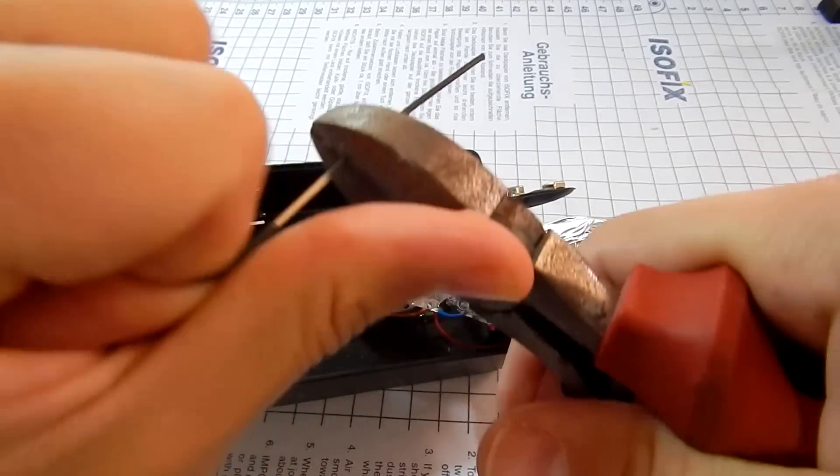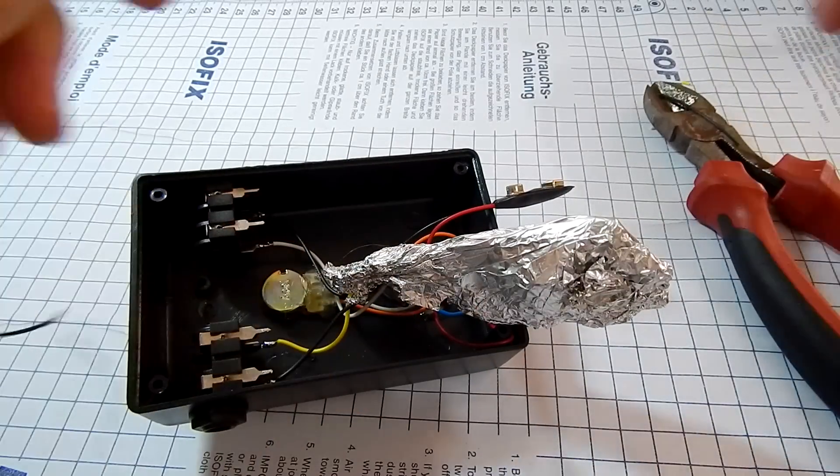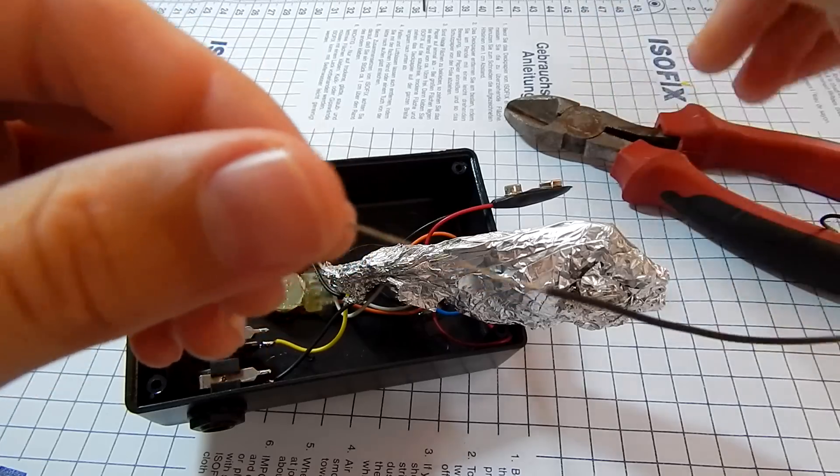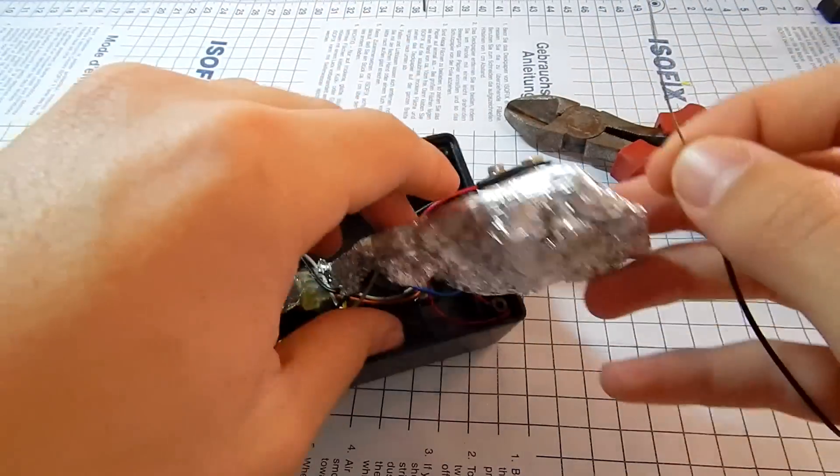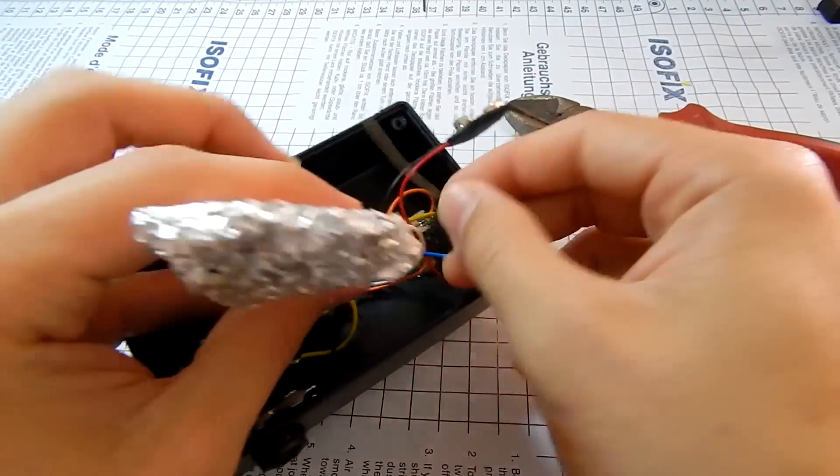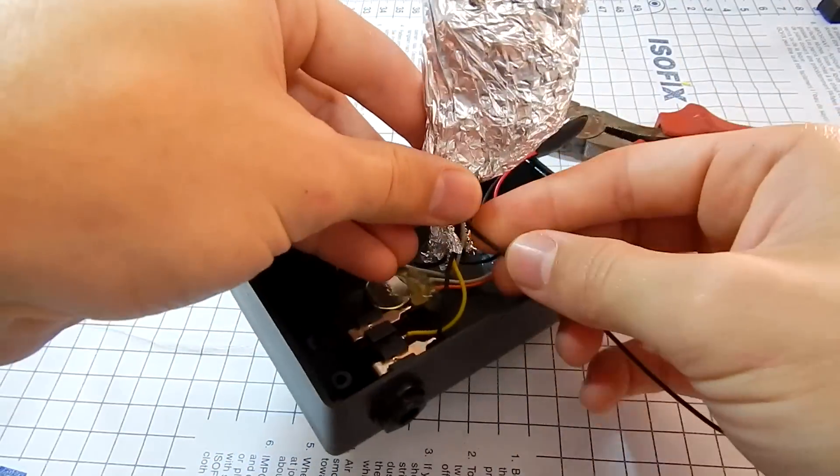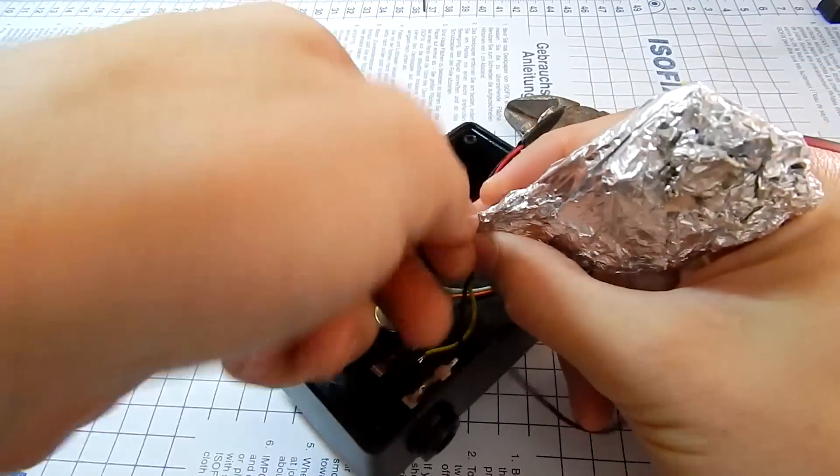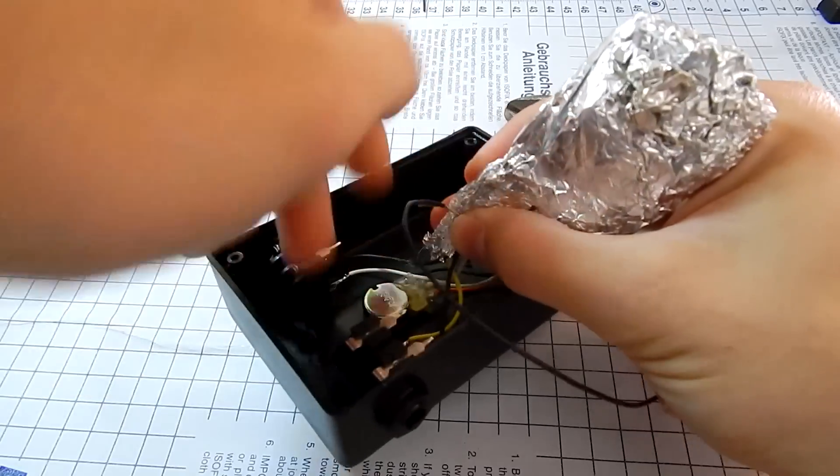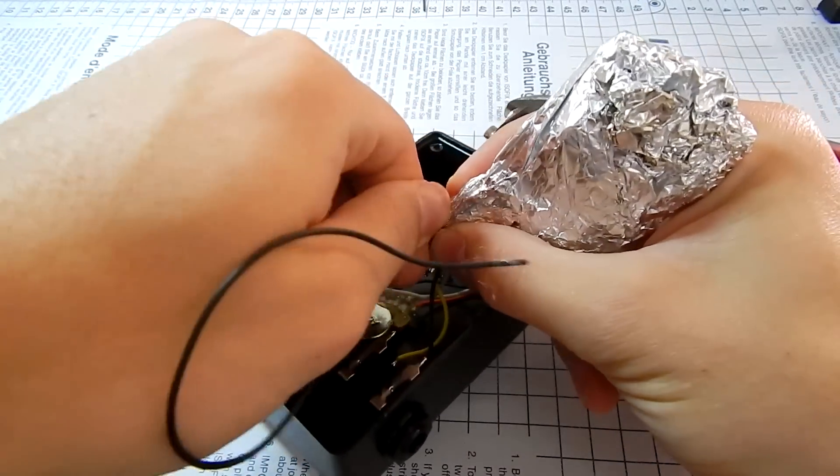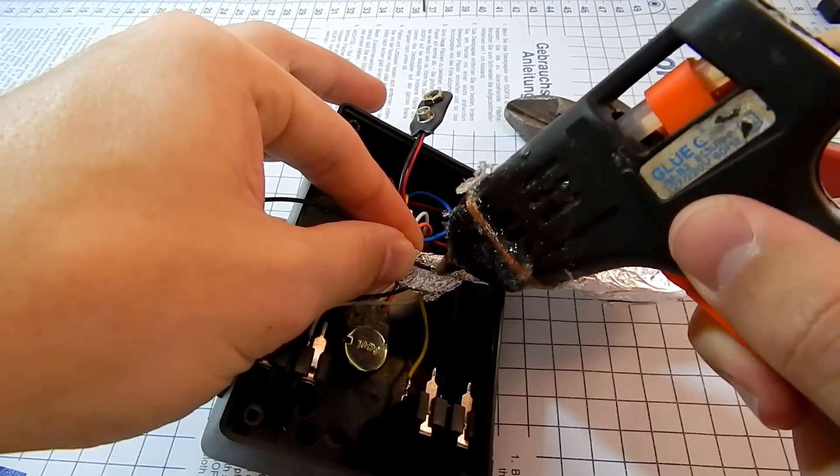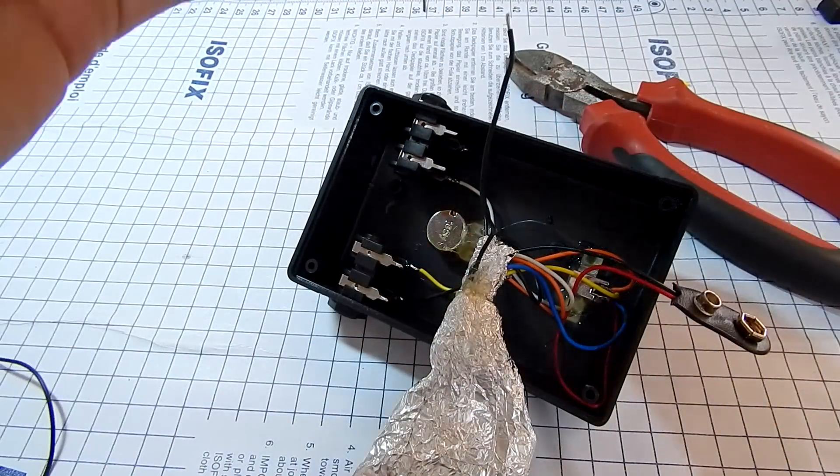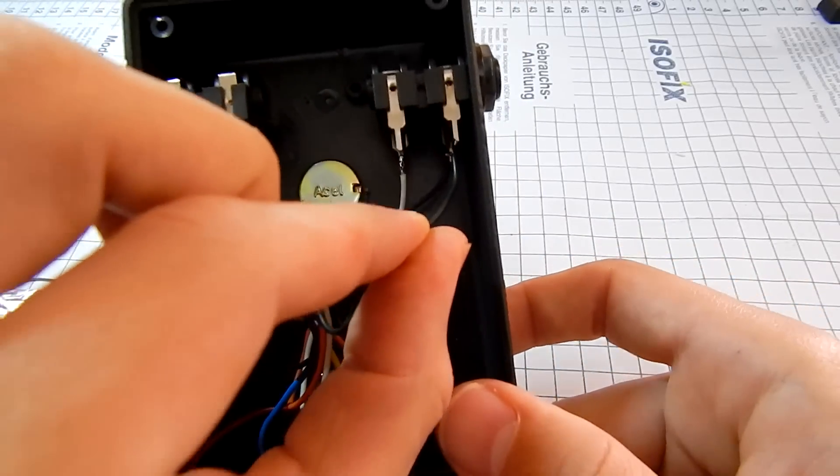Then we'll strip the end of a wire about 3 cm long and wrap it around the aluminum foil, like this. We'll reinforce with hot glue and connect the other end of the wire to ground. I'm using the negative of the input.